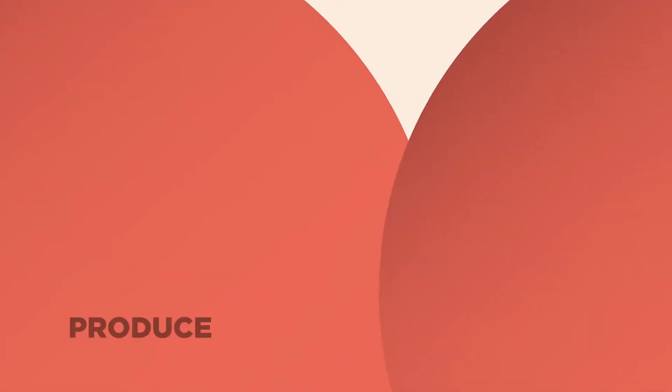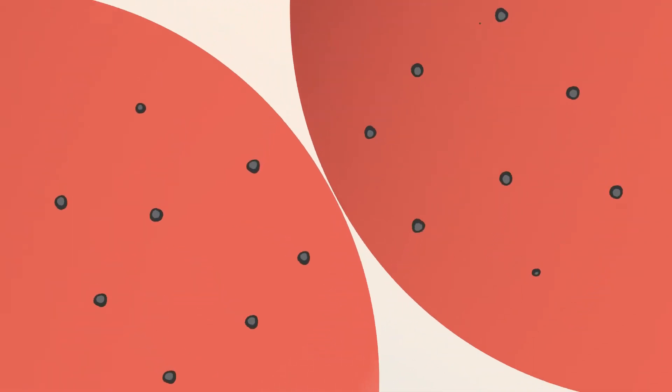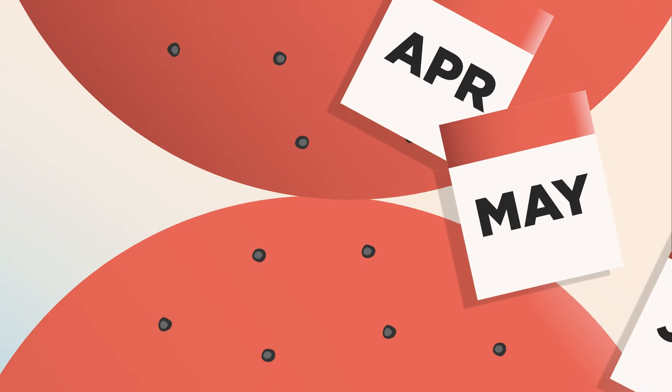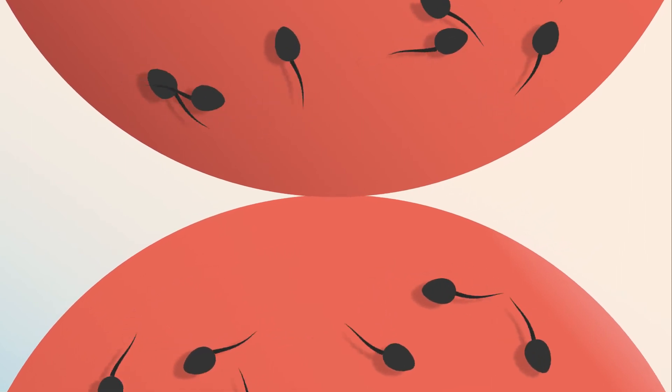Our testicle's other job is to produce sperm, which we need to make babies. We produce sperm continually throughout our adult life, but it takes three months to produce sperm from start to finish. This is important to remember if you are ever trying to have a baby.